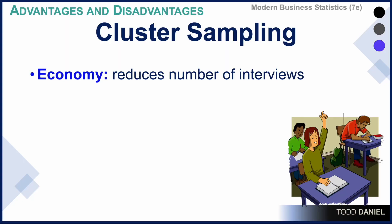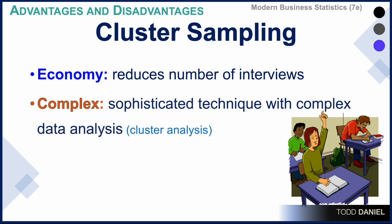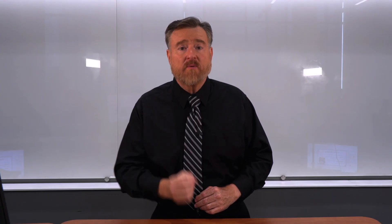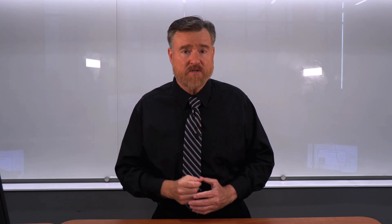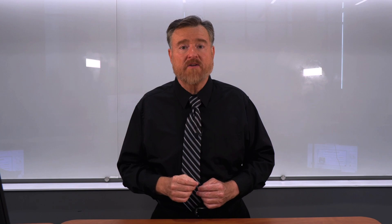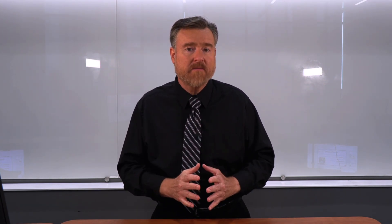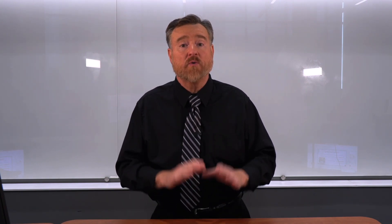The primary advantage of doing random sampling this way is the ease with which I can do the sampling. It is economical and reduces the number of interviews. Instead of traveling to random places throughout the neighborhood, I can go to every house on a specific block and get information from participants much more easily. However, this type of cluster sampling is more complex — it is a sophisticated technique that requires complex data analysis. If you are going to be doing cluster sampling, first talk to your statistician, and don't do cluster sampling if you do not have the ability to do cluster analysis.